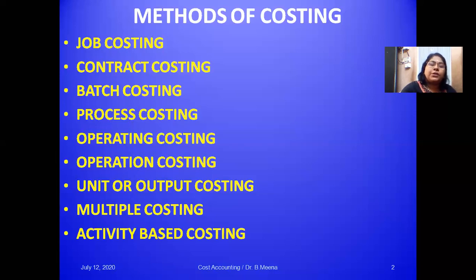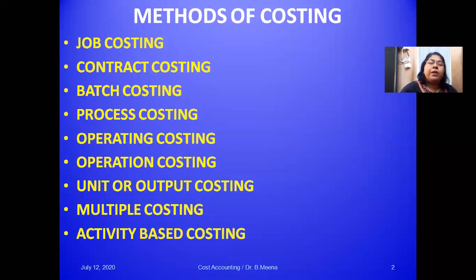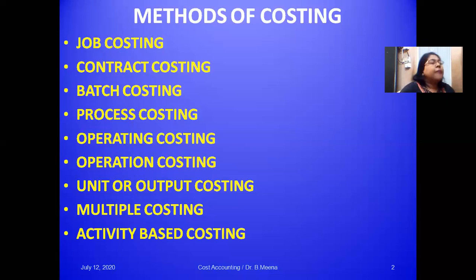Operation costing is different from operating costing. This method is applicable where there is mass production and several processes are involved with different operations to be carried out to complete the process of production. It is similar to process costing, but costs are maintained for every minute operation, making costs more accurate. That is the speciality of operation costing over process costing.